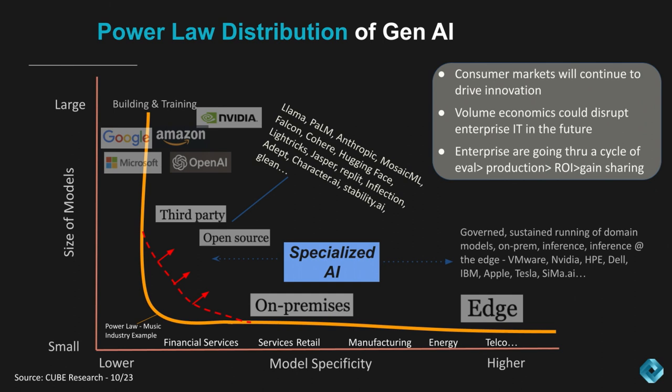One of the most significant barriers to Gen AI adoption today is concerns over privacy, legal exposures, and compliance. Coming back to the power law of Gen AI, many companies want to deploy Gen AI on-prem where much of their sensitive data still lives — think financial services, healthcare, and other regulated industries. And, of course, the edge.